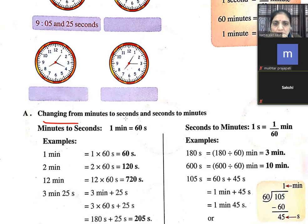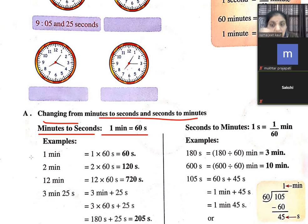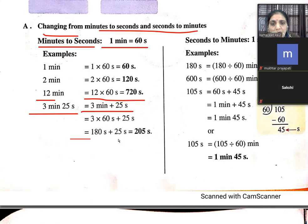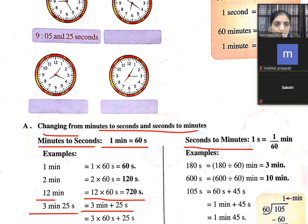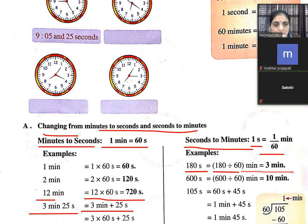Changing from minutes to seconds and seconds to minutes — one minute is equal to 60 seconds. So 2 minutes = 2 × 60 = 120 seconds. 12 minutes = 12 × 60 = 720 seconds. 3 minutes 25 seconds = 180 + 25 = 205 seconds. To convert seconds to minutes, divide by 60: 180 ÷ 60 = 3 minutes.